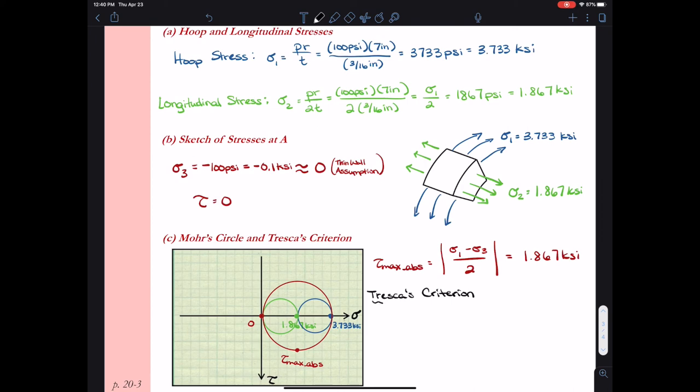So now I can go ahead and check my Tresca's criterion for failure. Tresca hypothesized that failure occurs when the absolute max shear stress reaches a critical value. So when tau max absolute, which is equal to the absolute value of sigma 1 minus sigma 3 over 2, when that exceeds the yield stress divided by 2, where we obtain the yield stress from a uniaxial tension test, that's when we have failure.